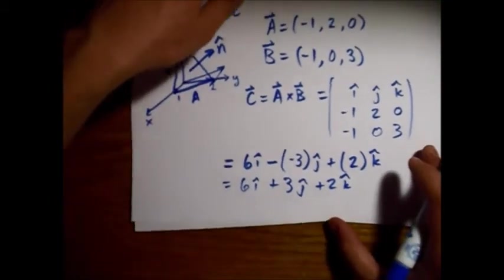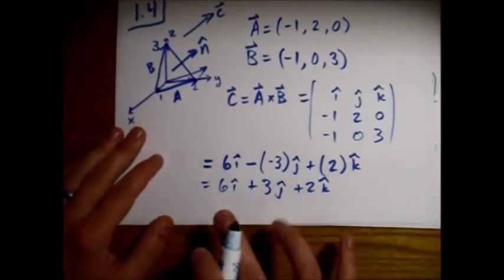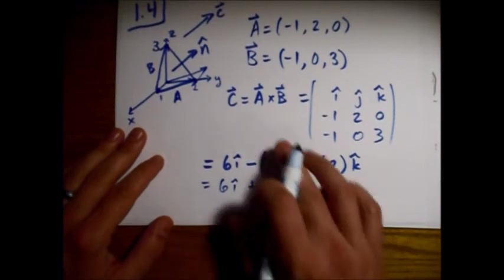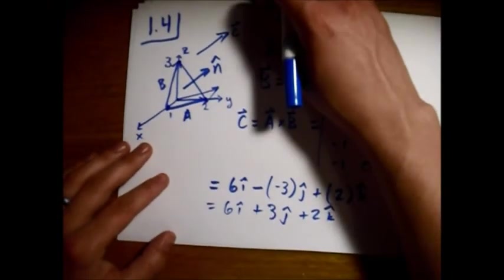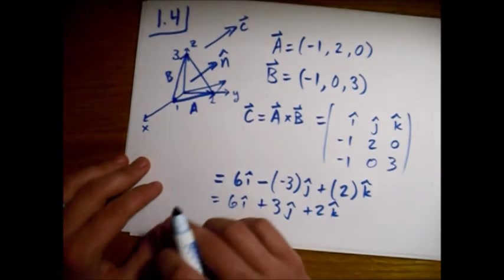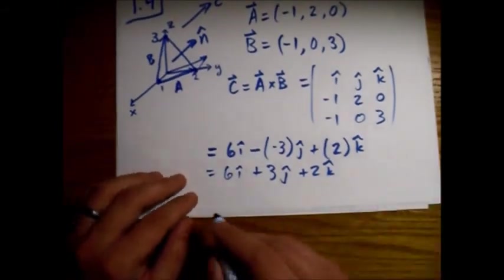So now we just need to find the magnitude of this vector, divide this by the magnitude, and we'll have a unit vector, which is n-hat.